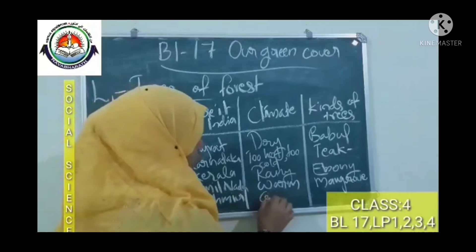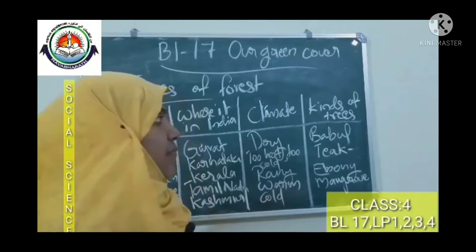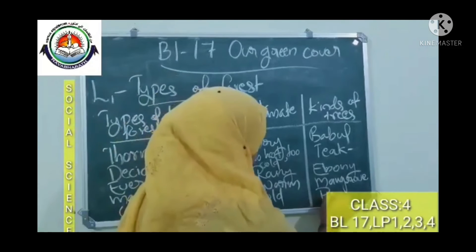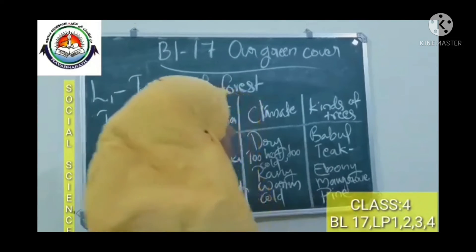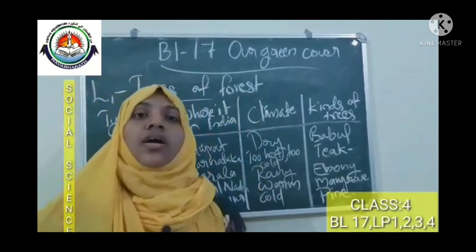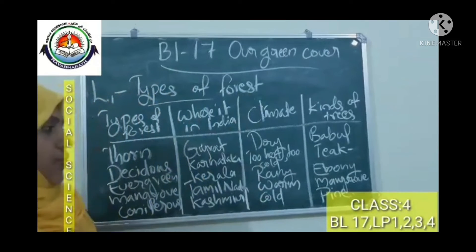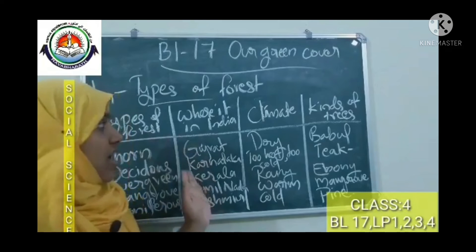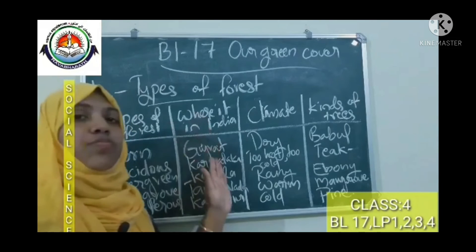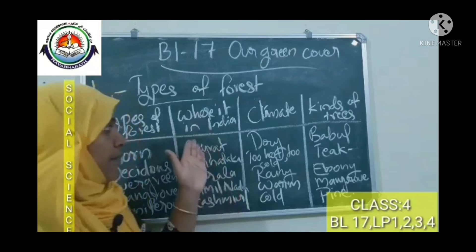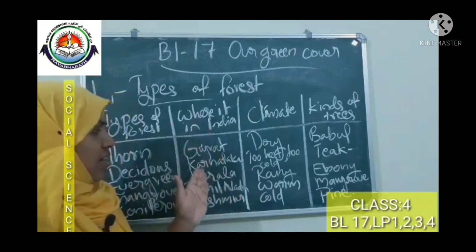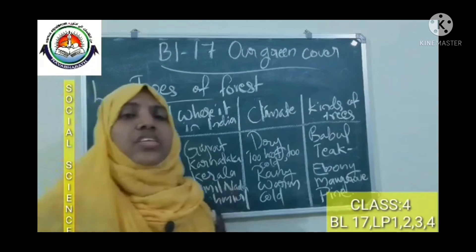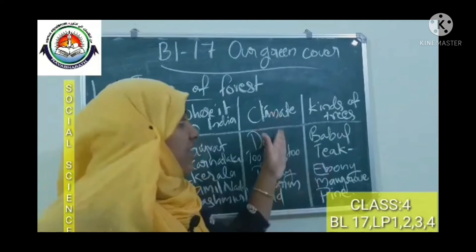The climate of coniferous forests is very cold. The most important tree found in coniferous forests is pine. So these are the various types of forest found in India — in different parts such as Gujarat, Karnataka, Kerala, Tamil Nadu, and Kashmir. Different types of forest have different climates.